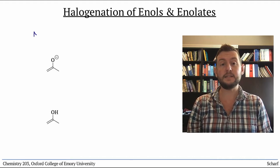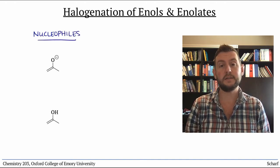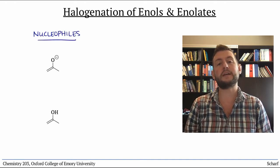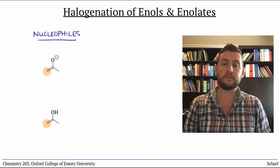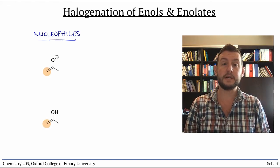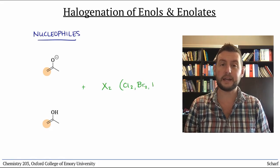Enols and enolates are nucleophilic at both carbon and oxygen, but they react with most electrophiles at carbon. One of the simplest electrophiles that react with enols and enolates are the dihalogens: chlorine, bromine, and iodine.